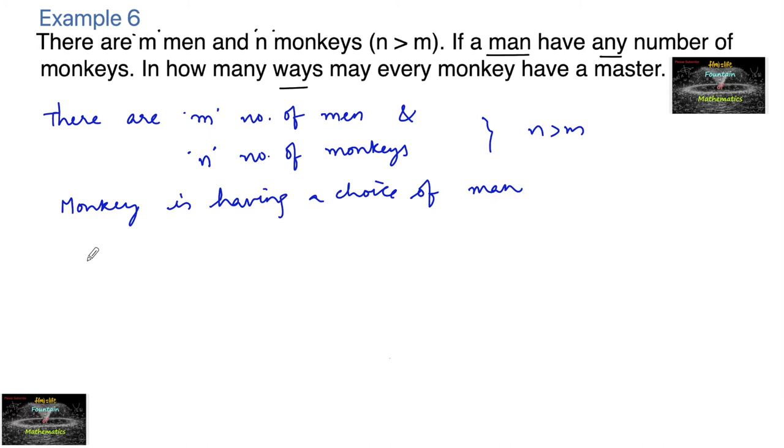So monkey 1, monkey 2, monkey 3, and so on - n number of monkeys are there. Each monkey is having a choice of m men. So let me write m1, m2, and so on, m men. These are men, and these are monkeys, n monkeys.